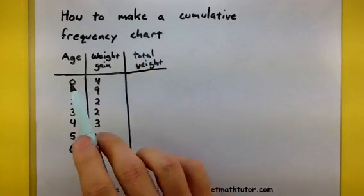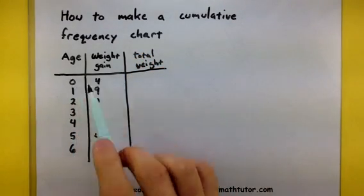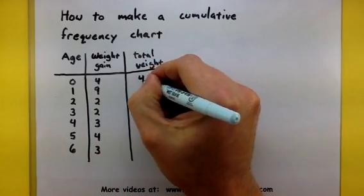Let's see how this works. So it looks like when the toddler was first born, they weighed four pounds. So right now our grand total is at four.